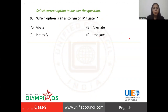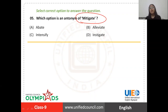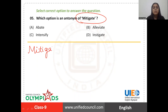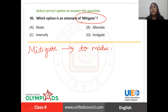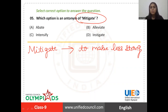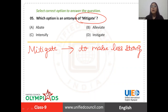Let's talk about question number five: which option is an antonym of 'mitigate'? We have to pick the opposite meaning of 'mitigate'. Firstly, 'mitigate' means to make something less strong — to lessen or reduce the effects of something, to make it less severe. If I talk about 'alleviate' and 'abate', both are synonyms of 'mitigate' and have similar meanings. 'Abate' also means to make something less strong or to become less strong.